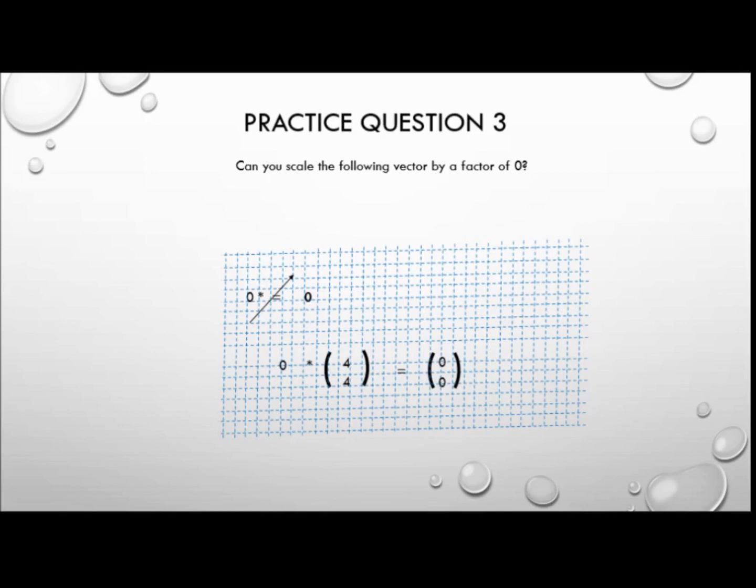Okay now this is the kind of question that could catch people out. Especially if you're used to the rule that anything times zero is zero. Well that's not strictly speaking true. If we multiply the scalar zero by any vector then we're going to get the null vector.